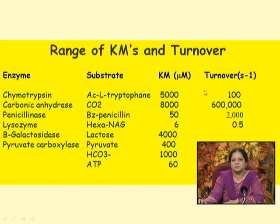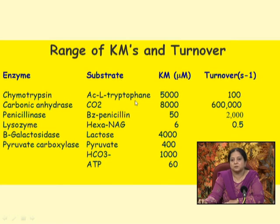A third parameter derived from both Kcat and Km is Kcat/Km, known as the specificity factor or specificity constant. If an enzyme has multiple substrates, the best way to identify the most suitable substrate is to compare Kcat/Km values. Whichever substrate gives the highest Kcat/Km is the most suitable substrate for that enzyme.